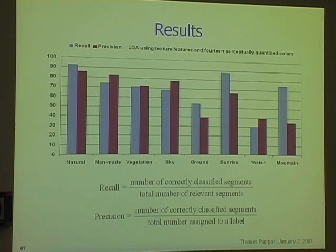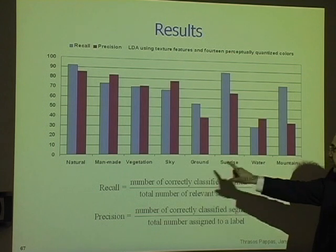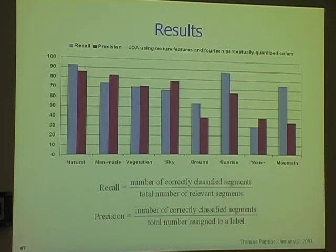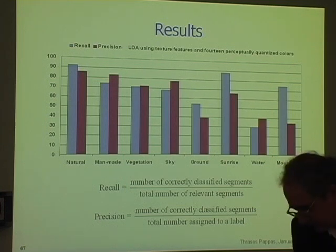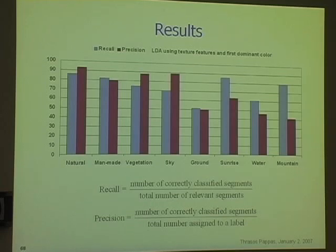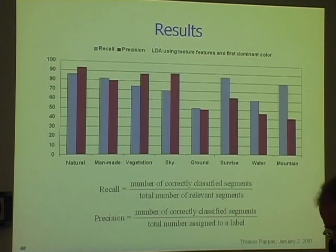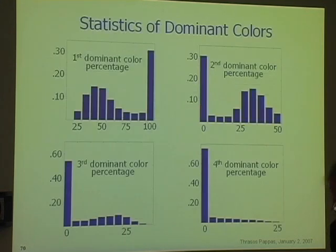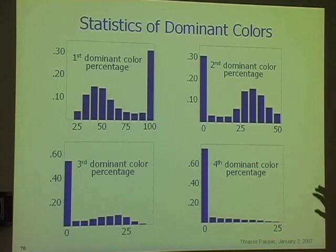We do some categories very well. We have some problem with water because it can be confused with sky. What we found is that if instead of using the 14 or 15 colors, we used the first dominant color — just look at the percentages, pick the dominant color, throw away the percentage, and represent the LAB value of that color — we do better. The question was why. You can use the first two dominant colors to get a little better. We looked at the statistics of our segments: if you look at the percentage of the first dominant color, in many cases it was close to 100%. The second color sometimes was there, but third and fourth were almost nonexistent. That explains it. The advantage of having the LAB values is, for example, the sky may be darker than the water, so there is some information there.